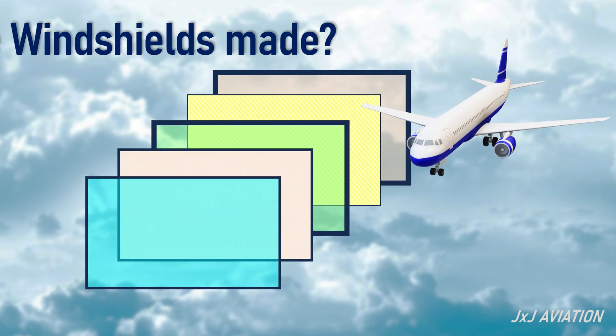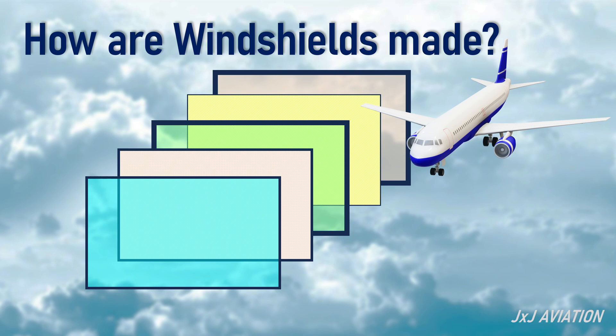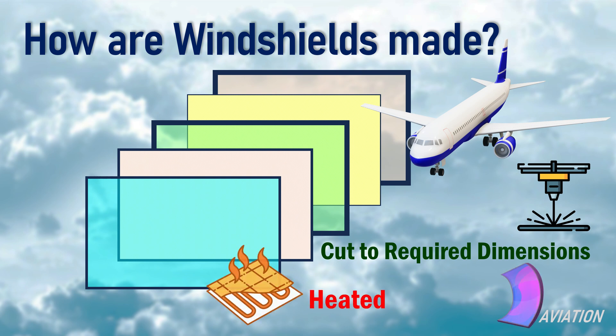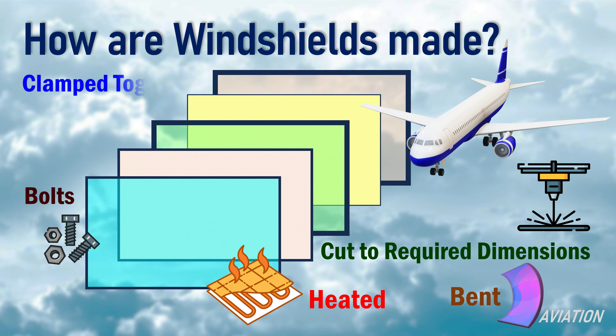How are windshields made? The different layers of a windshield are cut to the required dimensions. If a curved windshield is required, the layers are heated and gradually bent to the required curvature. The windshields may be fastened with bolts or clamped together with the cockpit airframe.